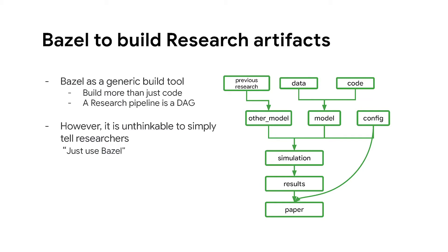On the right-hand side of this slide, you'll see that the research pipeline usually starts with some data. You write some research code, use someone else's previous research, combine the resulting models, depend on some configuration parameters, and depending on the research, you end up with a simulation. Finally, you get your research results, and the end product is a research paper.